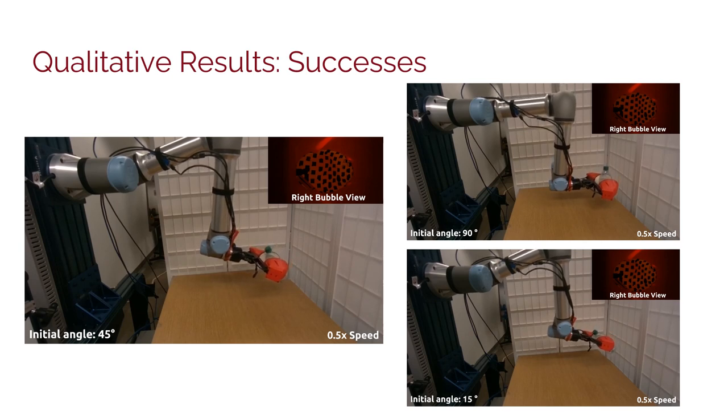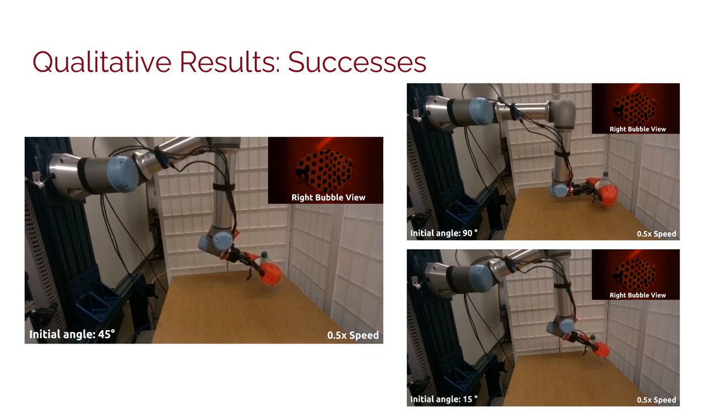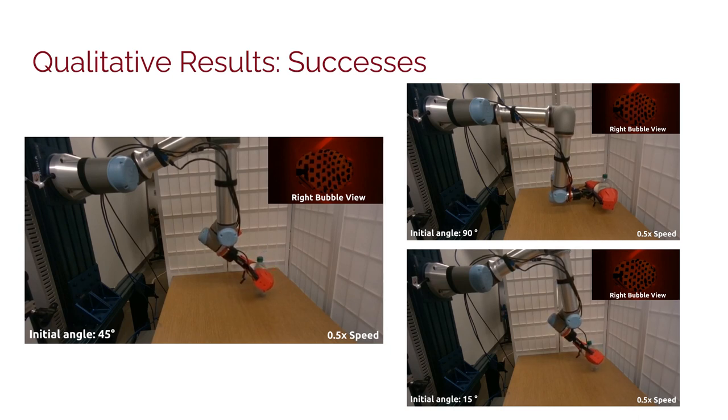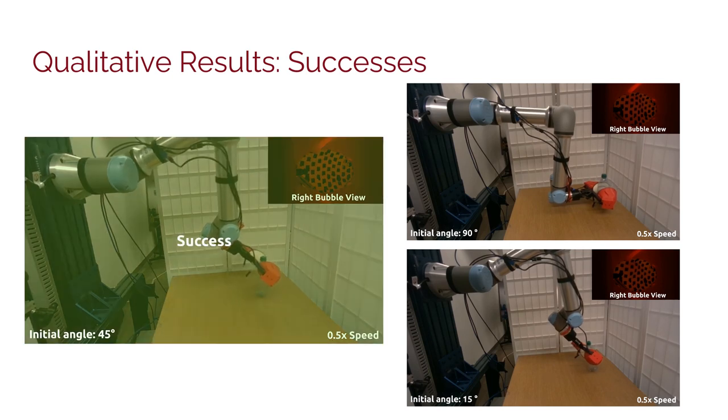Here we show qualitative results of successful rollouts of the trained Diffusion Policy on the rotate bottle task. We examine the policy's ability to learn the data distribution and accomplish the task at various initial bottle rotations including 45, 90, and 15 degrees.